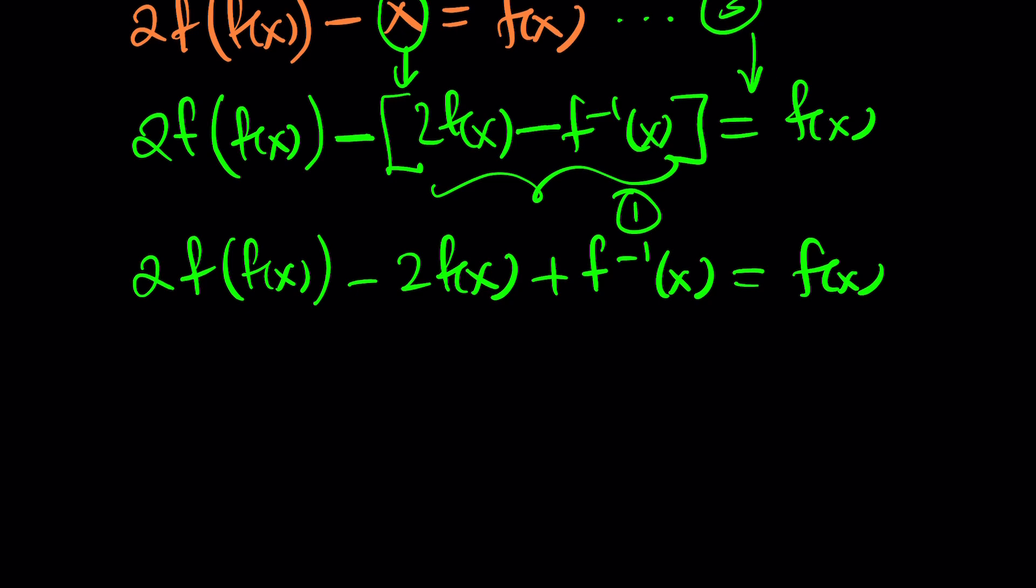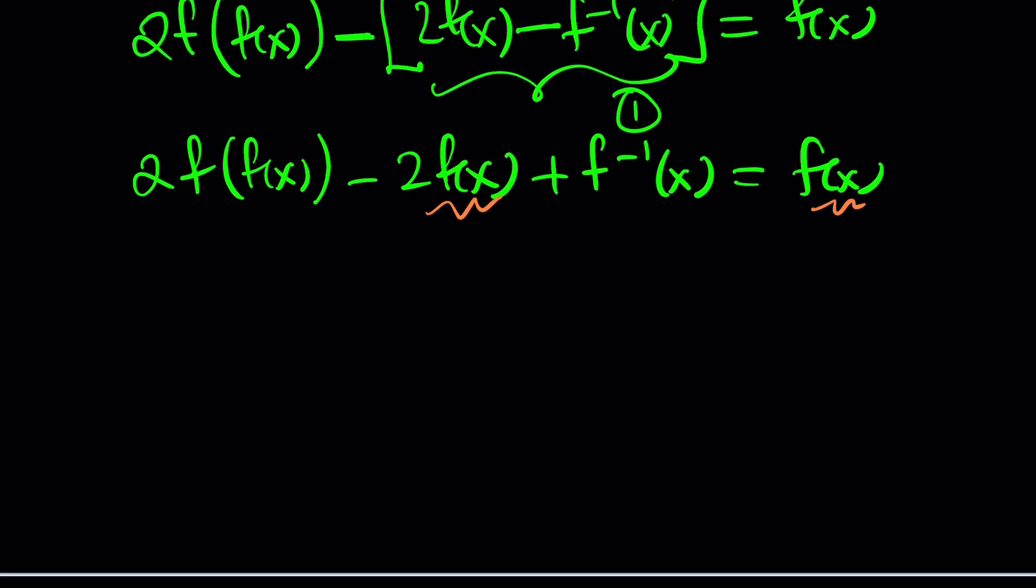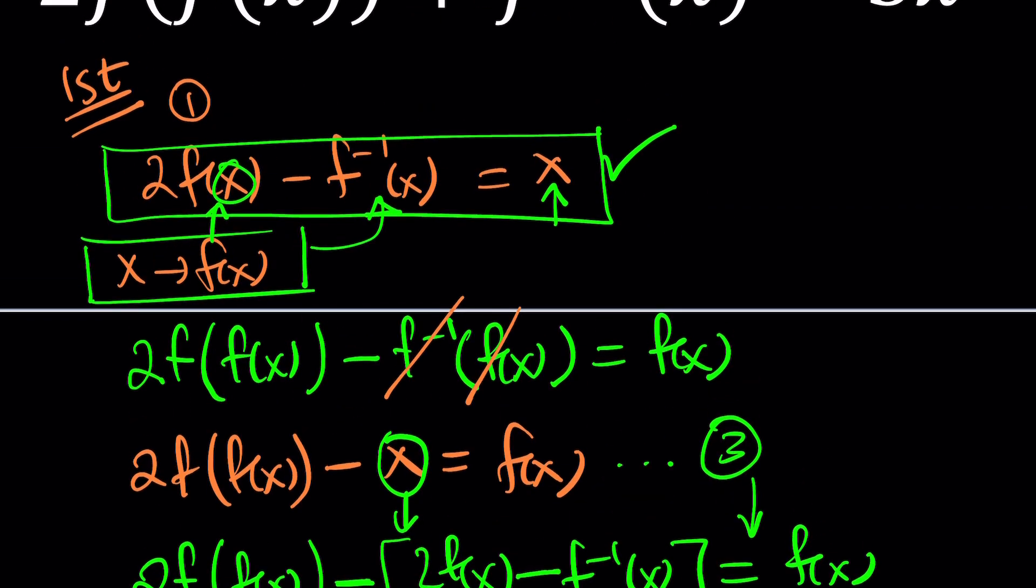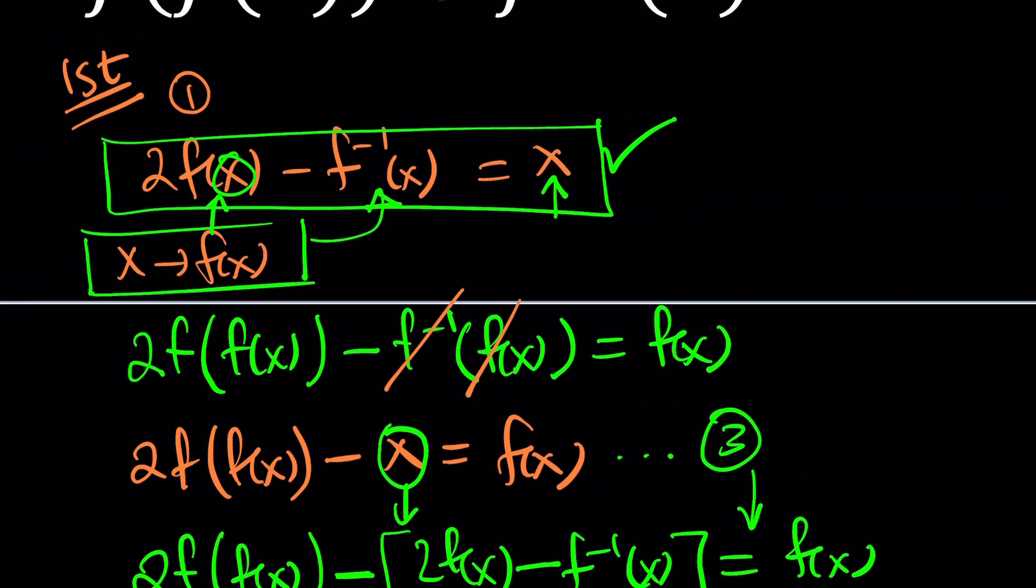Now we see like terms. These two are like terms. Let's go ahead and add 2 f of x to both sides. 2 times f of f of x plus f inverse equals 3 f of x. You might be questioning, is this any better than what we started with? Is this better than the original? Yes and no. Now if you go back and look at equation number two, you can realize something mind-blowing.